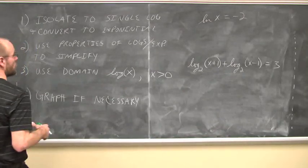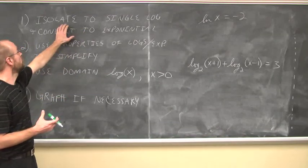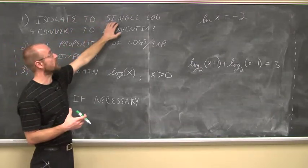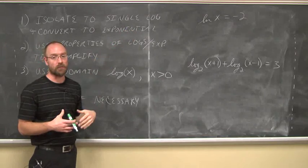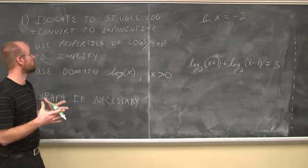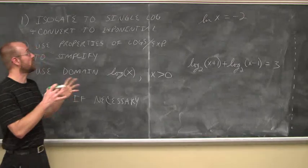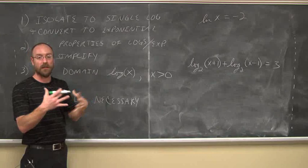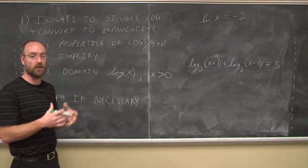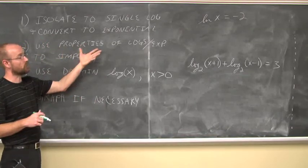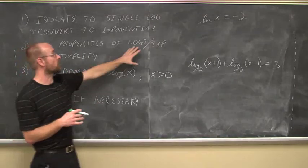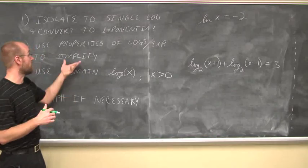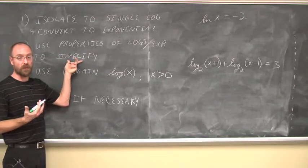When it comes to working with exponential or logarithmic equations, if we're dealing with logs, the first thing is to isolate it to a single logarithm. Maybe we use our properties of logarithms to simplify it to that single log and then isolate it. And if we can, convert it to an exponential equation. Maybe it's some nice value that we could do without a calculator. If not, we're using those properties to write it as a single logarithm or exponential expression equal to whatever the other side of the equation is, because these are equations. Try to simplify it.